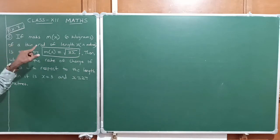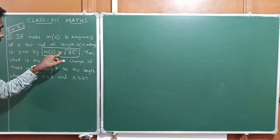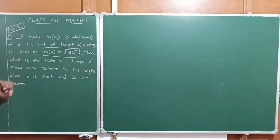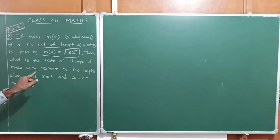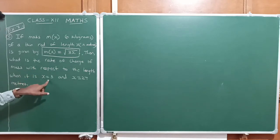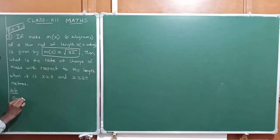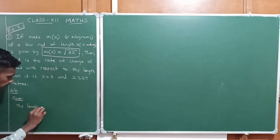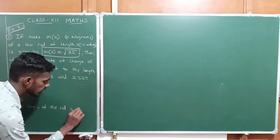The mass m(x) is equal to root of 3x. The given data is to find the rate of change of mass with respect to length at the length x is equal to 3 and x is equal to 27.